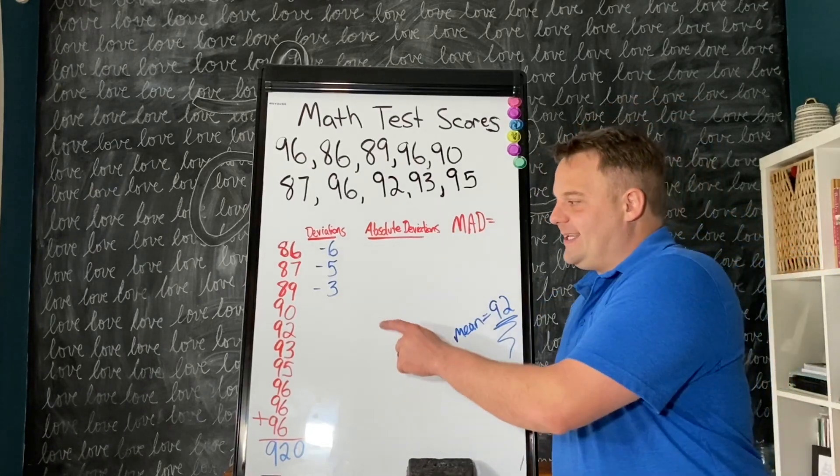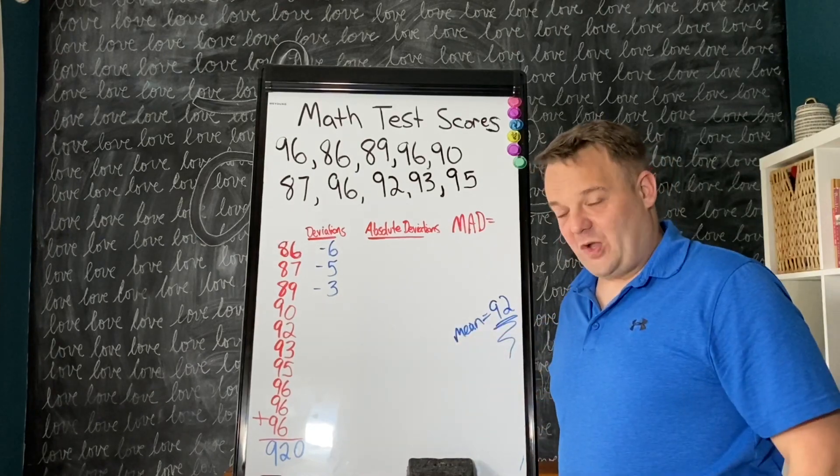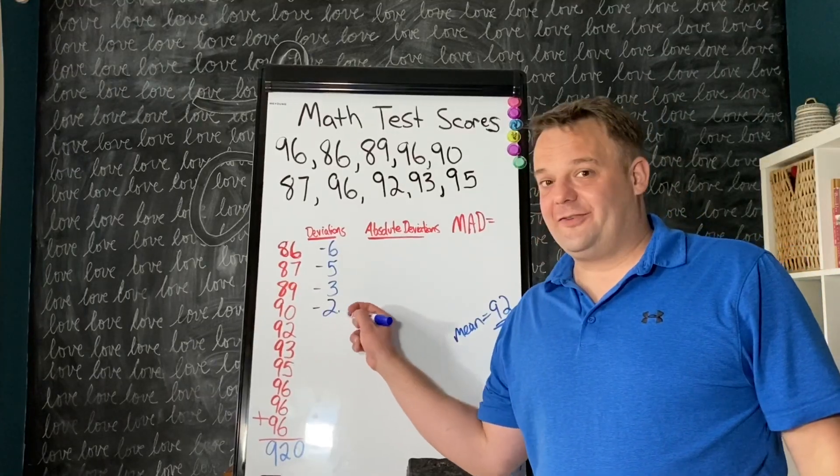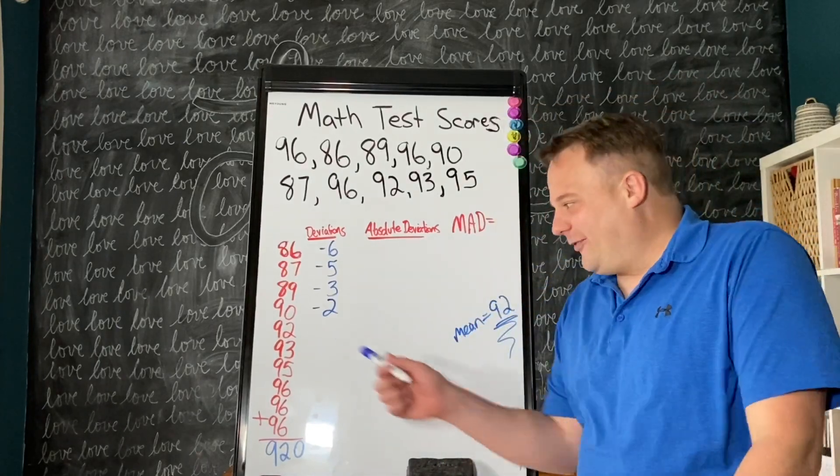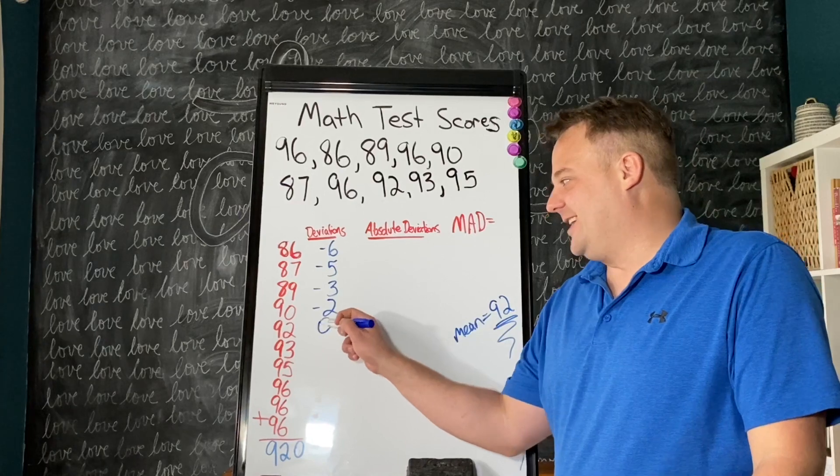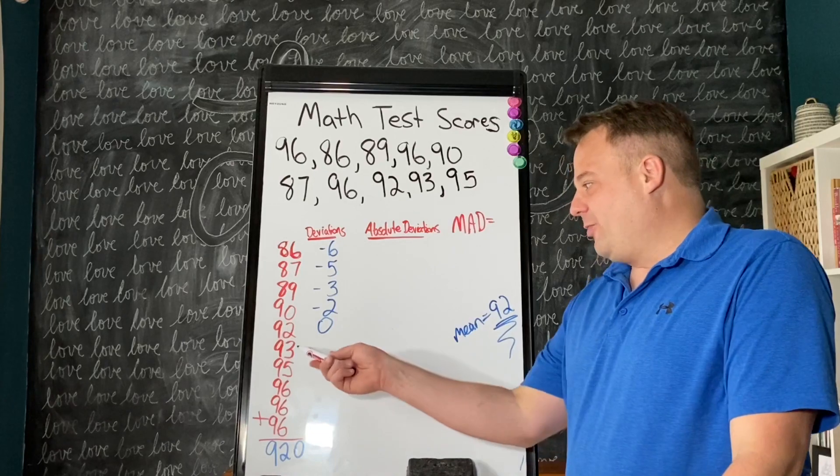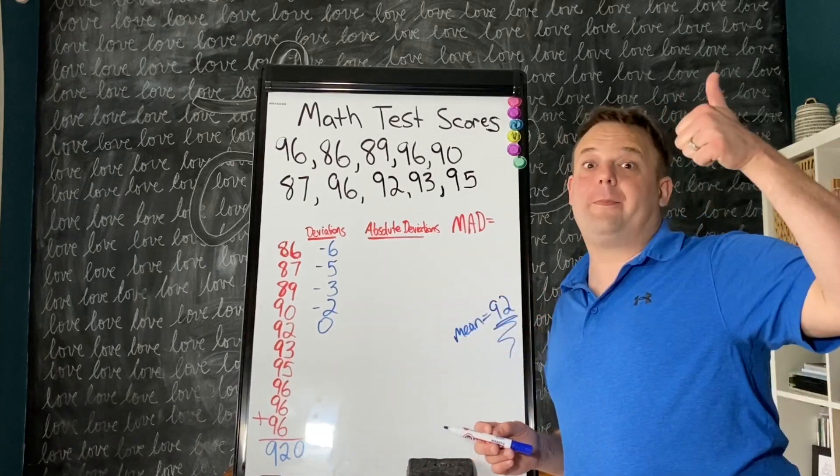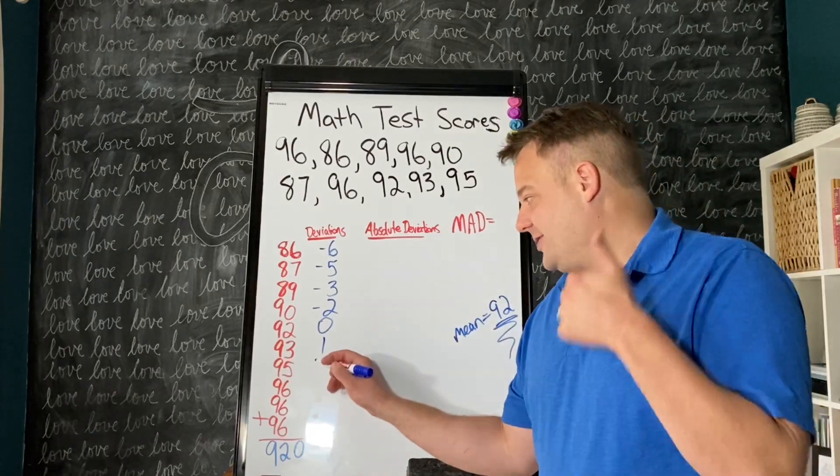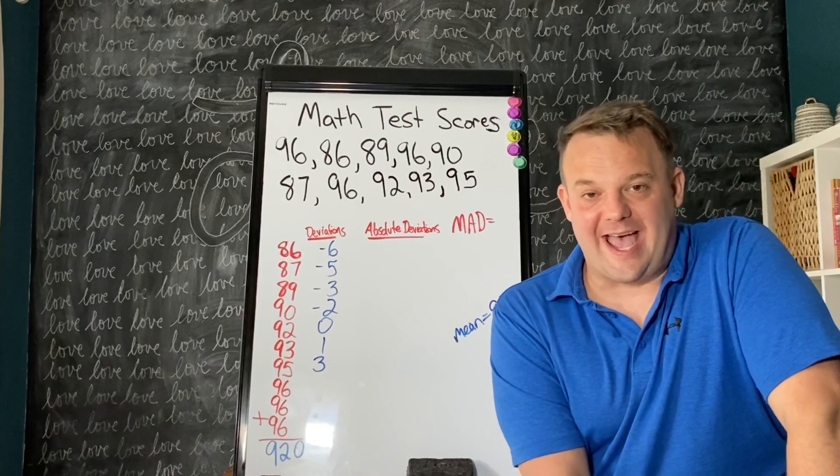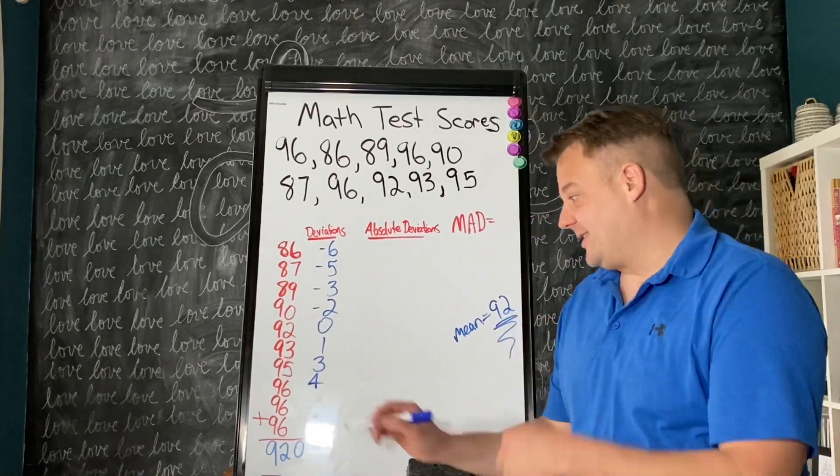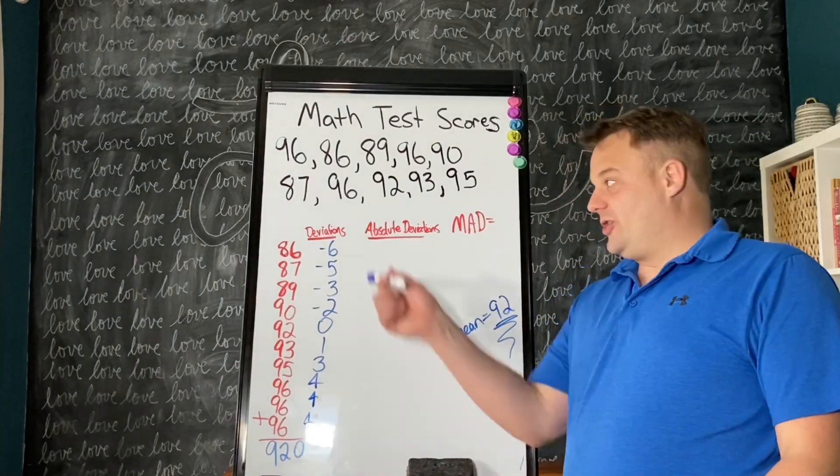What is the deviation from 92 to 90? It's negative 2. What if it's 92? In this case, that would be a deviation of 0. Now we're starting to go up. 92 to 93 went up, so it's positive 1. 92 to 95 goes up 3, so that's positive 3. 92 to 96 is 4. And 92 to 96 again, so these are all 4s. Do you know what deviations are?